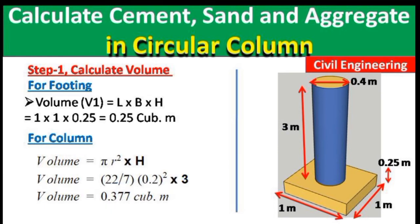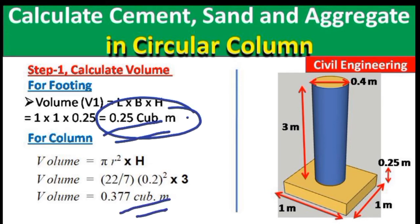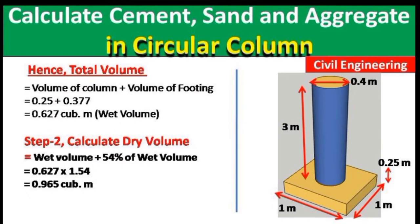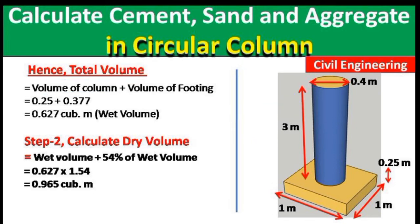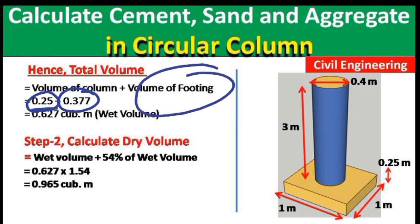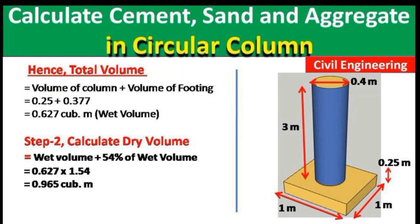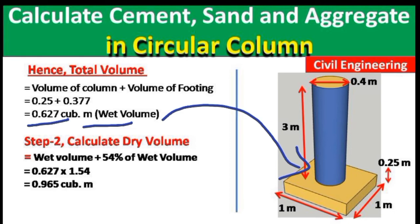The volume of the footing is 0.25 cubic meters and the volume of the column is 0.377 cubic meters. Adding both gives a total wet volume = 0.25 + 0.377 = 0.627 cubic meters. When we calculate the volume of any structure, it is always in wet volume.